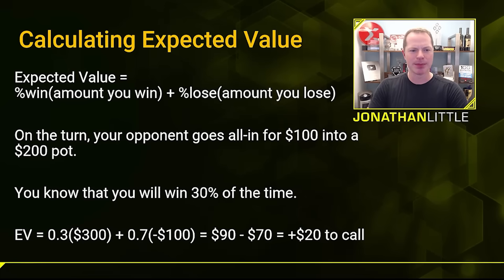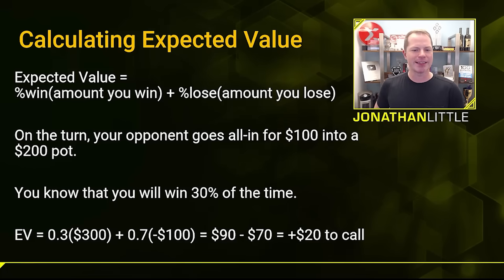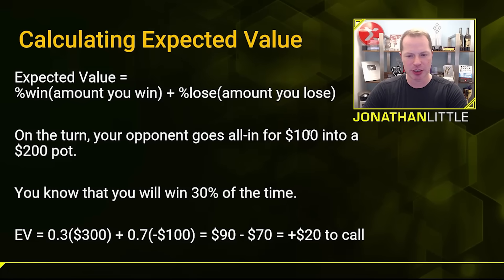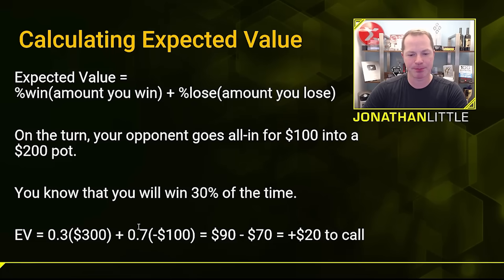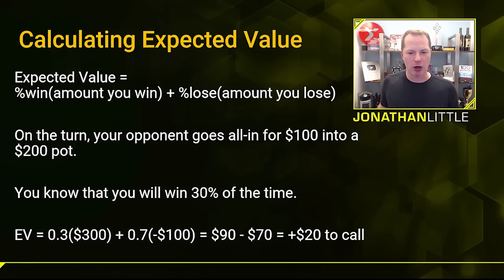Let's take a look at an example. Your expected value equals the win percentage times the amount that you win (profit), plus the percent you lose times the amount you lose. So let's say on the turn your opponent goes all in for $100 into a $200 pot, and you know that you will win 30% of the time. What is your EV? Well, 30% of the time you're going to win $300 — the $200 pot and the $100 your opponent is putting in. You're taking the current pot plus the amount your opponent is putting in; you're not counting your call in this amount. So, 0.3 times 300 plus 0.7 times the amount you lose, which is 100 — giving you 90 minus 70, which equals a $20 profit when you call in this situation.